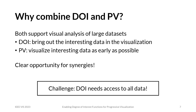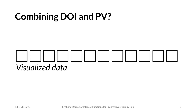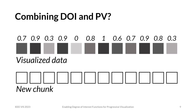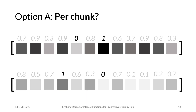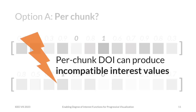The challenge hindering this combination is that in order to compute a Degree of Interest Function, we need access to all data to find out which parts are actually interesting. Whereas in progressive visualization, we inherently visualize only parts of the data over time and may never see all data at once. We could compute the DOI function per chunk — only looking at the current chunk — which is fast, but produces inconsistent interest values. Something interesting in one chunk might not actually be interesting in the scope of all visualized data so far.